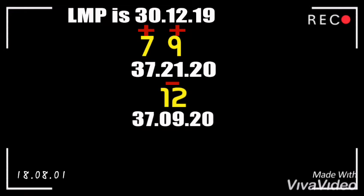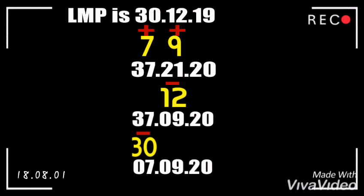This equation doesn't exist because September (09) only goes up to 30 days, not 37. So we subtract again: 37 minus 30 gives us 07. The equation is now 07/09/20. But remember, whenever you subtract the date, the month automatically increases by one.